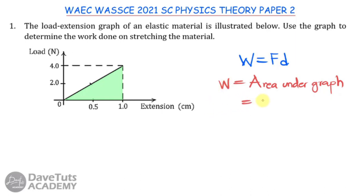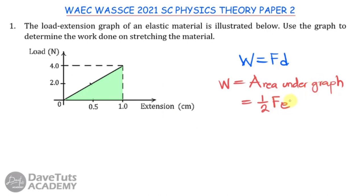The solution is that the work done equals the area under the graph. This area is a triangle, so it is one-half multiplied by base multiplied by height. In terms of the graph variables, this is one-half multiplied by F multiplied by E, where F is the force and E is the extension.